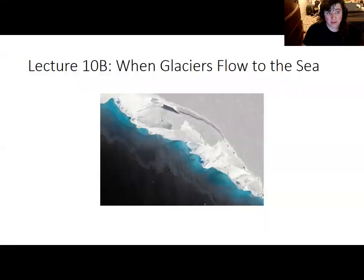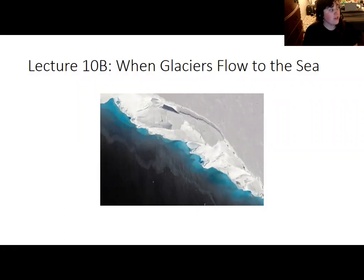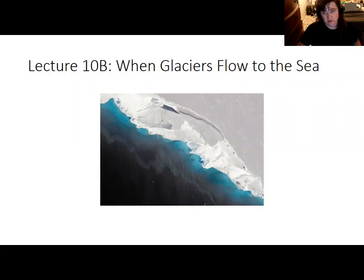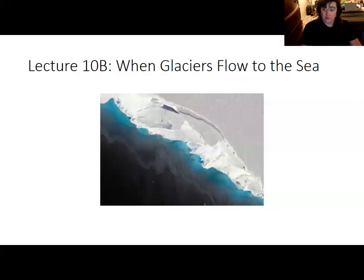Hi everybody, and welcome back to the second part of the lecture where we talk more about some specific peculiarities of how glaciers flow in Antarctica — like what happens when glaciers flow to the sea, how some parts of glaciers flow faster than others in the form of ice streams, and how a network of subglacial lakes exist. Most of this lecture will relate to what happens to glaciers when they reach the ocean.